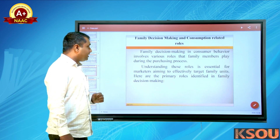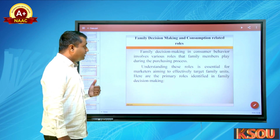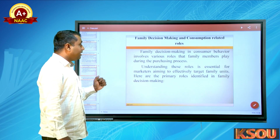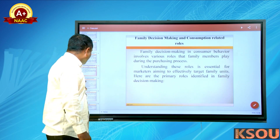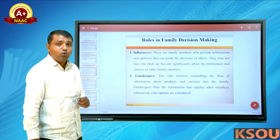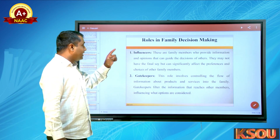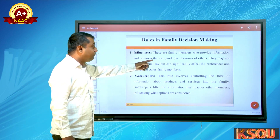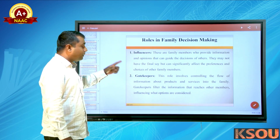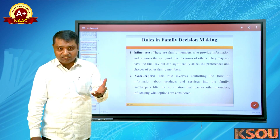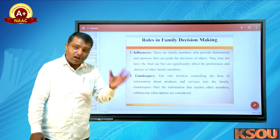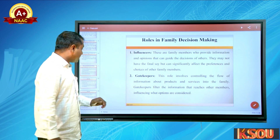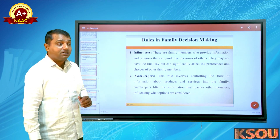Family decision-making and consumption-related roles: family decision-making in consumer behavior involves various roles that family members play during the purchasing process. Understanding these roles is essential for marketing aimed at effectively targeting family units. The first role is influencers — family members who provide information and opinions that guide others' decisions. They may not have the final say, but can significantly affect the preferences and choices of other family members.